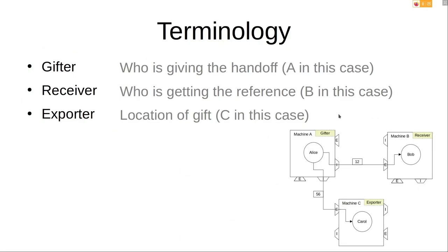There's some terminology to go over. The gifter is the one giving the handoff — in this case machine A. The receiver is the one getting the reference — machine B. The exporter is the location of the gift — machine C. A slight complication: the exporter doesn't have to be the actual home of the object; it could technically be a promise. But in this simple situation it is where Carol lives, and the mechanics of the handoff don't actually change.